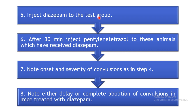The next step is to inject diazepam to the test group. Diazepam is the drug under test whose anticonvulsant activity we are going to check. Inject diazepam to all animals of the test group. After 30 minutes of administration of diazepam, inject the pentylenetetrazole to induce convulsions in all animals of the test group. Allow 30 minutes for the drug to act before inducing convulsions. After administration of PTZ, note down the onset and severity of convulsions in the same way as done for the control animals.